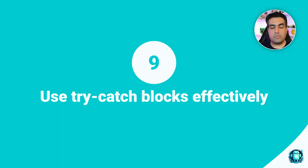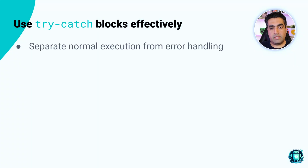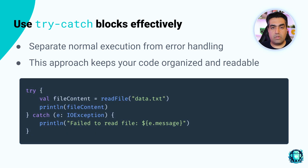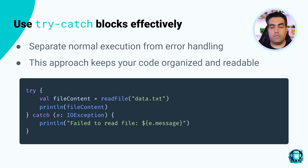Number nine: use try-catch blocks effectively. Separate normal execution from error handling with well-structured try-catch blocks. This approach keeps your code organized and readable. In this example, the normal execution is reading the content of a file and printing it to the console. The error handling is catching an IOException that might be thrown when trying to read the file. By using a try-catch block, we clearly separate the normal execution flow from the error handling logic, making the code more organized, easier to read, and easier to debug.